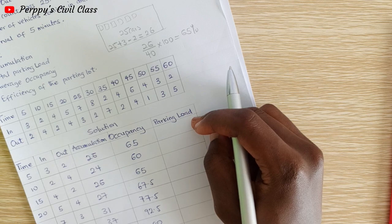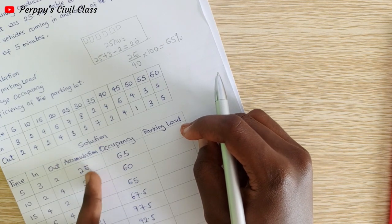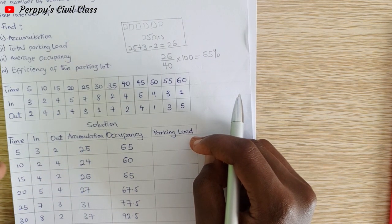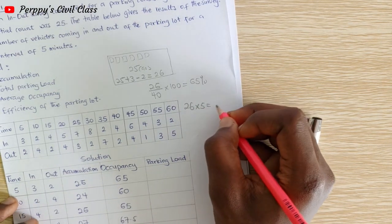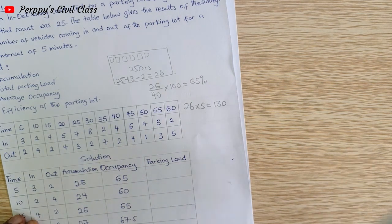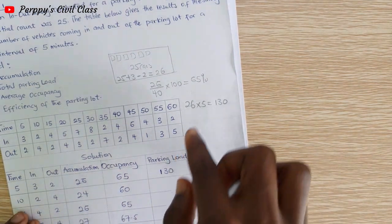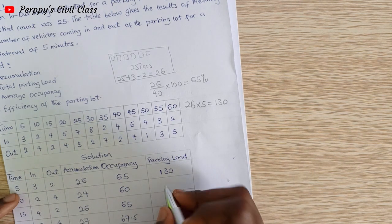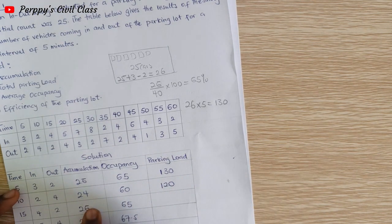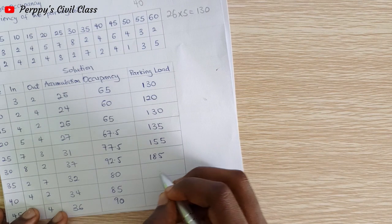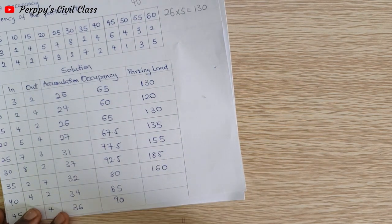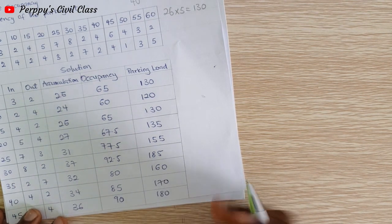The parking load is obtained by multiplying the accumulation by the time interval. So for the first interval: 26 times 5 = 130 vehicle-minutes. The next: 24 times 5 = 120. Then 26 times 5 = 130, 27 times 5 = 135. Continuing: 155, 185, 160, 170, and 180.